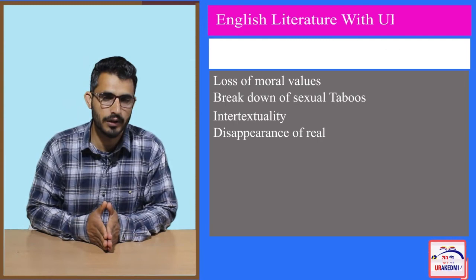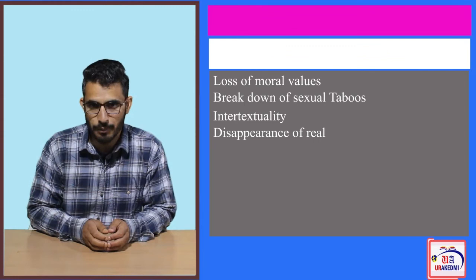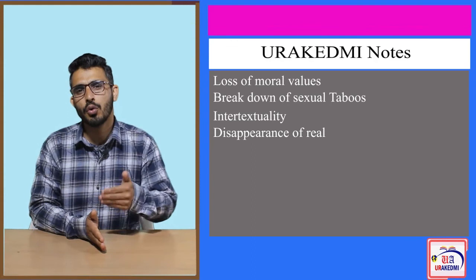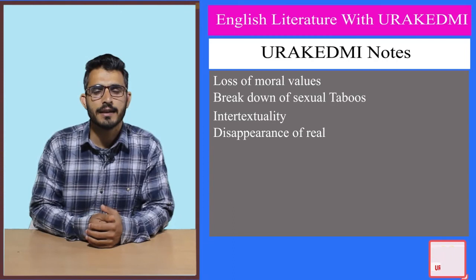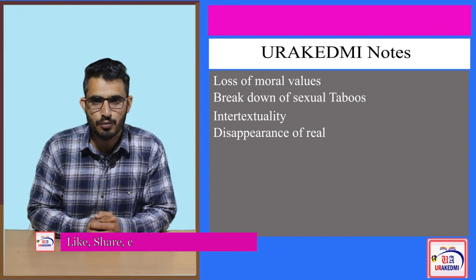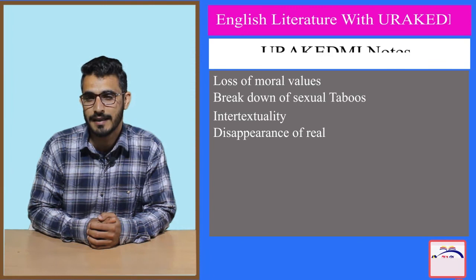These were some of the postmodern elements found in this particular play. Based on these elements, we say that Who is Afraid of Virginia Woolf is a postmodern play, a postmodern drama. Whenever we apply postmodernism to any text, we look for all these aspects — and if we find these elements in a play, novel, or poem, then we say it is a postmodern text. That was the lecture about the application of postmodernism on Edward Albee's Who is Afraid of Virginia Woolf. I hope this lecture was helpful, and you were able to understand the play from a postmodern lens. Thank you for watching, don't forget to share, like, subscribe, and comment. Keep watching Your Academy.